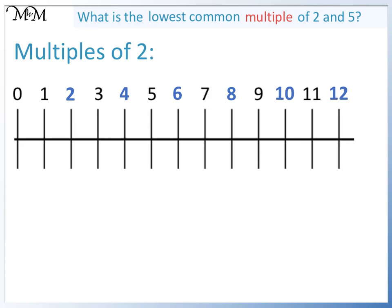On this number line, the multiples of 5 are 5 and 10. Our numbers are 2 and 5. 2 times 5 is 10. So we do not need to look at any numbers larger than 10.